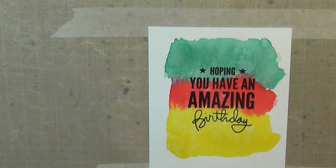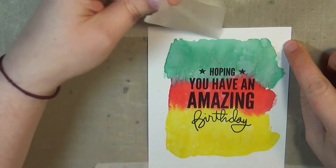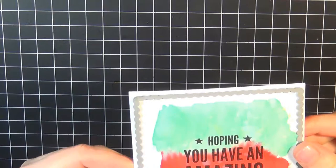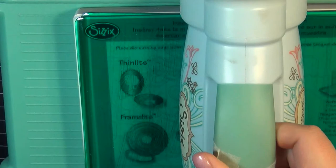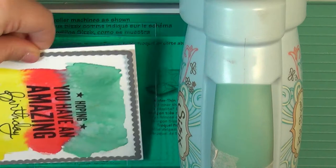You can see there how wonderful that just makes the whole thing pop. I'm going to go ahead and remove my tape here, and I'm going to die cut this piece down just a little bit. I'm using the scallop frame from the Mama Elephant Femme Frame set just to give it a little decorative edge.